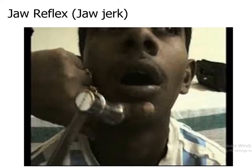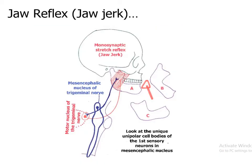Jaw jerk, or jaw reflex: the patient is asked to open the mouth slightly. The examiner taps his index finger placed on the patient's chin in a downward direction. This tapping will stretch the masseter muscle. When the masseter muscle is stretched, the impulses are taken from the masseter muscle through the branches of the trigeminal nerve to the mesencephalic nucleus of the trigeminal nerve. From there, they connect with the branchial motor nucleus of the trigeminal nerve, and the motor impulses are sent through the mandibular division of the trigeminal nerve to the masseter muscle, which contracts and the mouth closes.